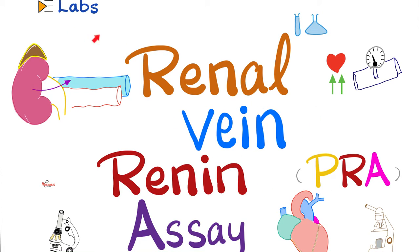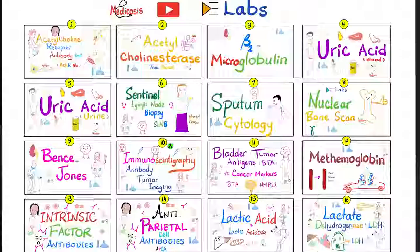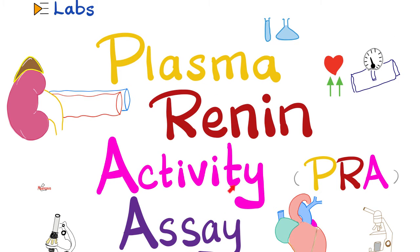Hey guys, it's Medicosis Perfectionist, where medicine makes perfect sense. Let's continue our labs playlist. In previous videos we talked about beta-2 microglobulin, lactic acid, lactate dehydrogenase, uric acid, potassium, chloride, and the plasma renin activity assay. Today is a similar but not identical test known as the renal vein renin assay. Please watch the videos in this labs playlist in order, especially the last video on the plasma renin activity assay, because today's video builds upon it.